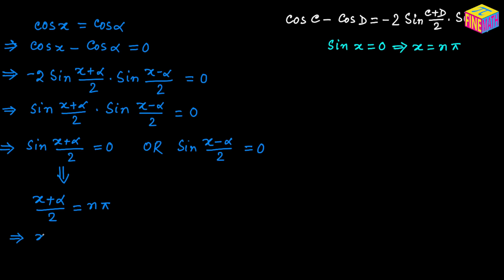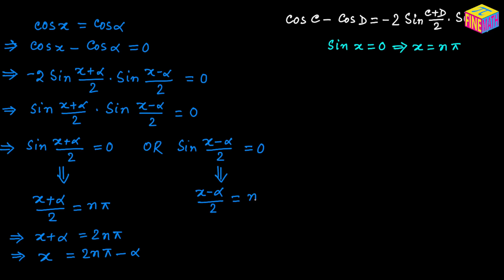From that we get x equals 2n times pi minus alpha. From the other factor, x minus alpha over 2 equals n times pi, so x minus alpha equals 2n times pi, and therefore x equals 2n times pi plus alpha.